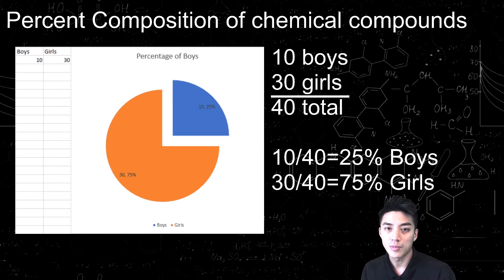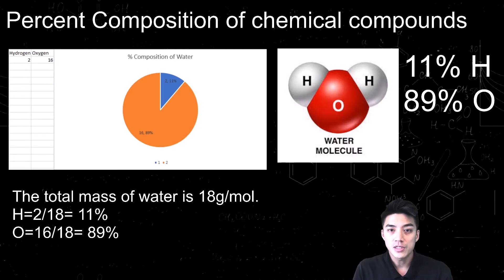Next you would divide the number of boys by the total. So if you go 10 divided by 40, you would have 25% are boys. The other 75%, because it's parts of a whole, has to be girls. The percent composition of chemical compounds is no different from that idea.